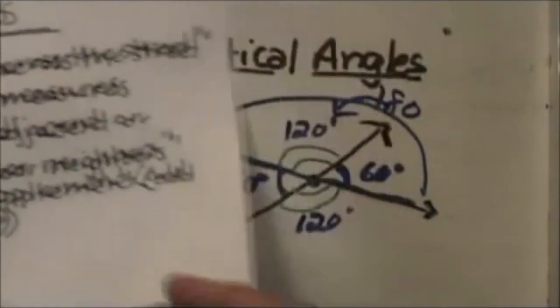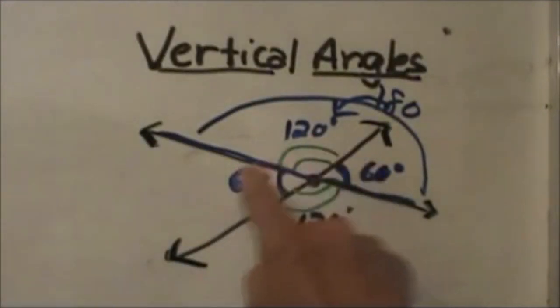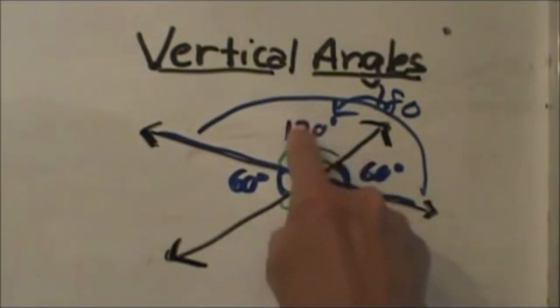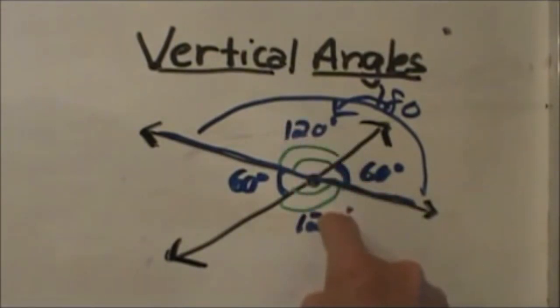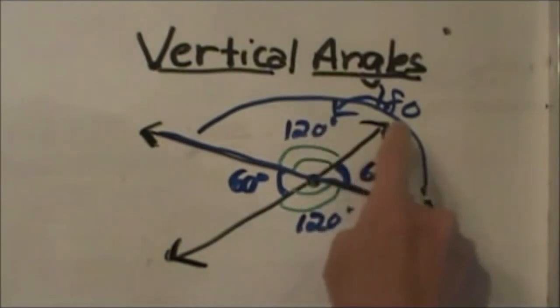So let's go back to our diagram again. These two 60 degree angles are vertical angles. These two 120 degree angles are vertical angles but these two next to each other are what we call adjacent angles and they add up to 180.